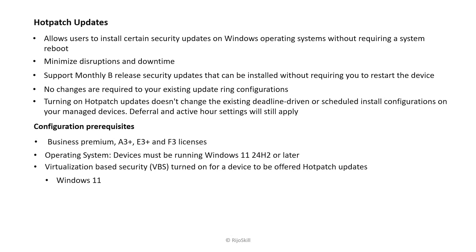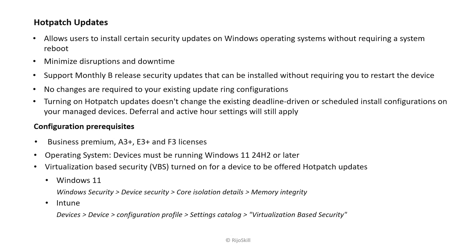To turn on VBS on your device, go to Windows Security, then Device Security, then Core Isolation Details, and enable Memory Integrity. In Intune, you need to create a configuration profile with the Virtualization-Based Security setting. On ARM64 devices, you must also disable Combined Hybrid PUSA.